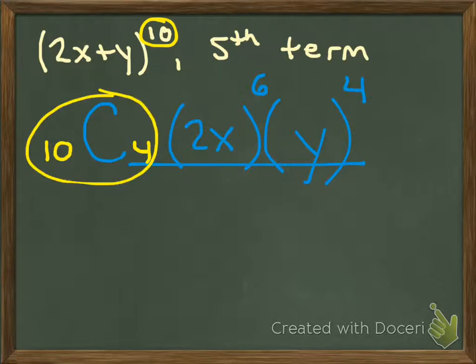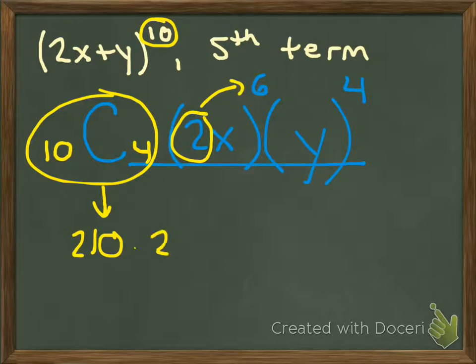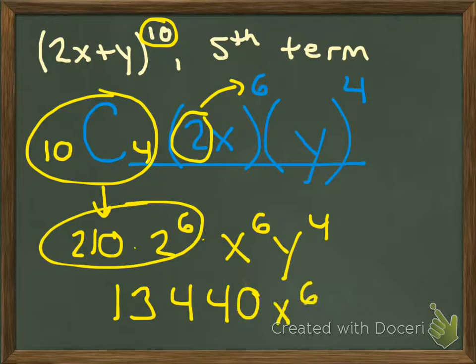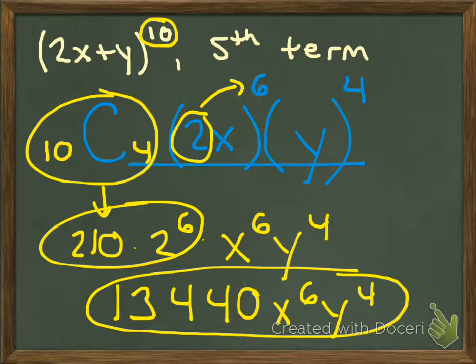So we figured out all the pieces with the formula. We just now need to multiply it all together. We can figure out what 10 choose 4 equals. We know that equals 210. Right here, I have 2 being raised to the sixth power. I'll let my calculator do the work. And then we have x to the sixth power, y to the fourth. I use my calculator to multiply these. And this comes out as 13,440 x to the sixth, y to the fourth. And this is the fifth term in the list.